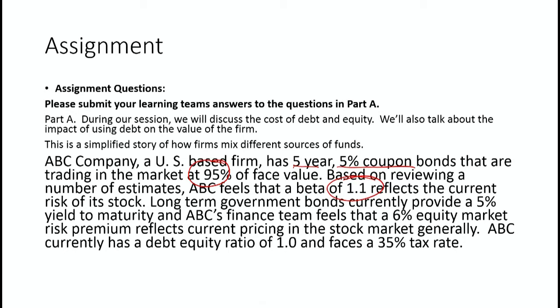Long-term government bonds currently have a 5% yield to maturity, and ABC's finance team feels that the market risk premium is 10%. Right now, ABC has a debt to equity ratio of 1 and faces a 35% tax rate. So I've asked you to address a number of questions for ABC. Let's look at those.